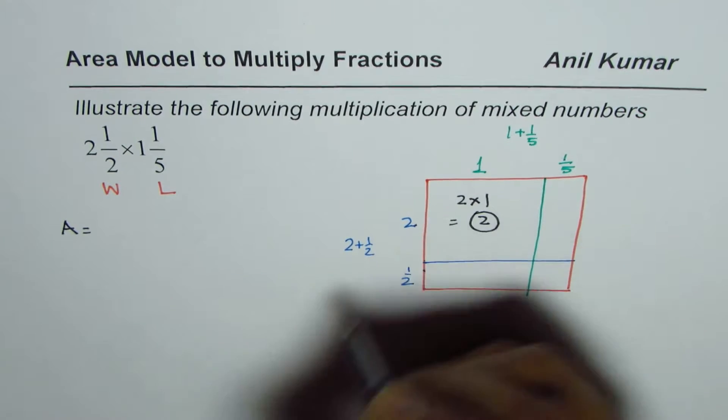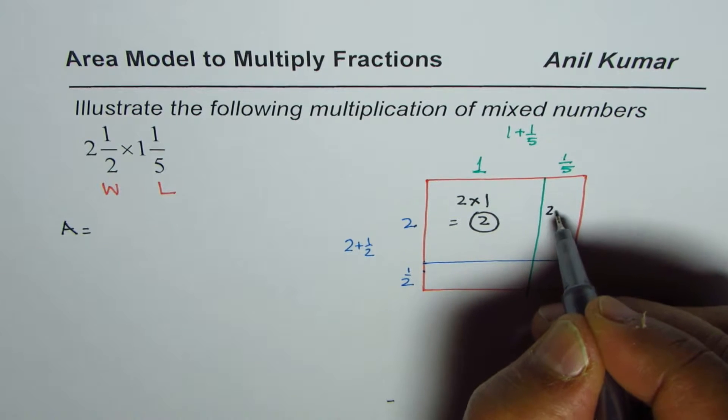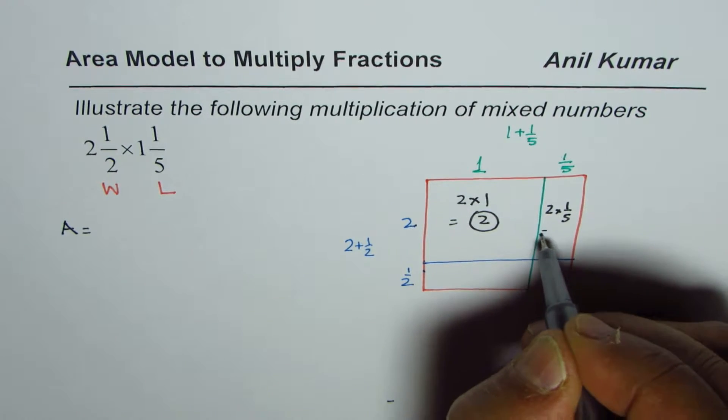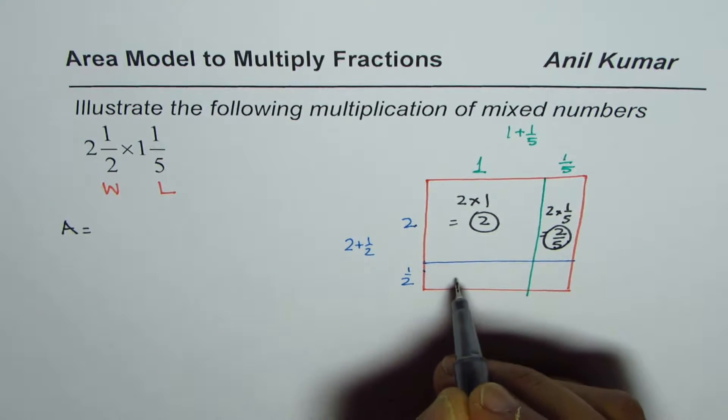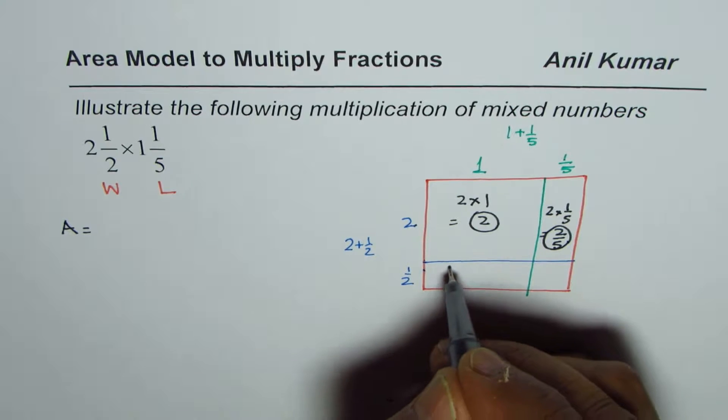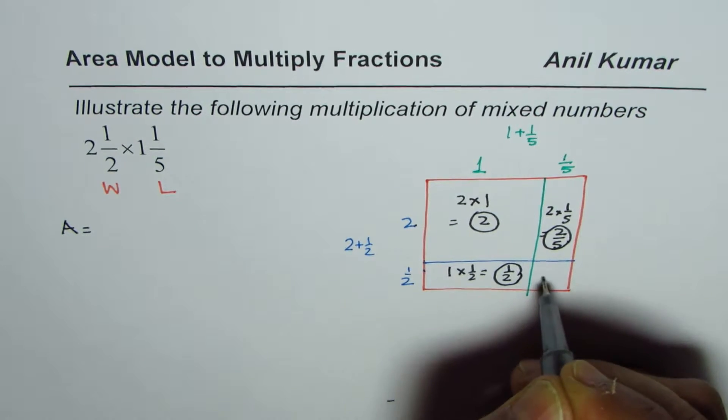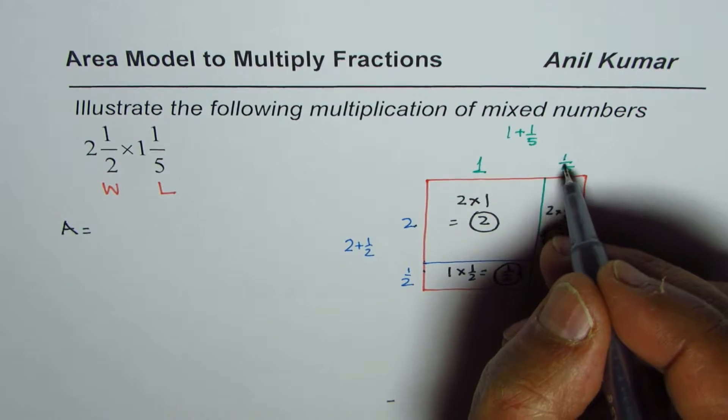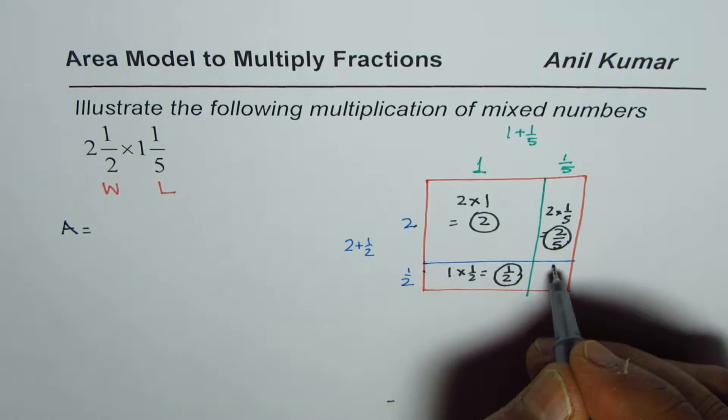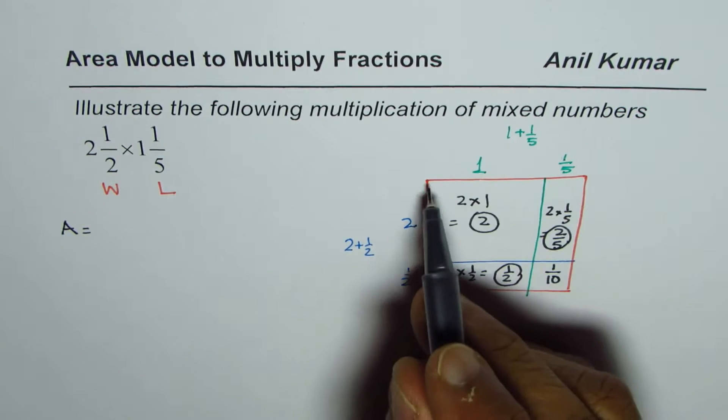This rectangle has area of 2 times ⅕, so it equals ⅖. Here the area is 1 times ½ which equals ½. This small one here will be ½ times ⅕, which equals 1/10.